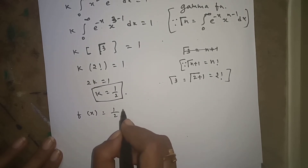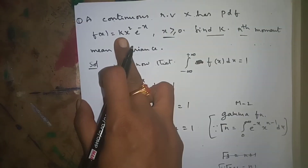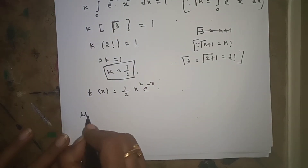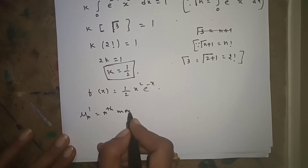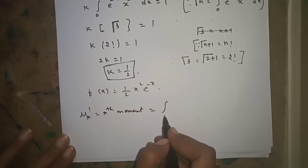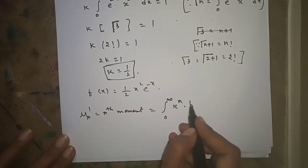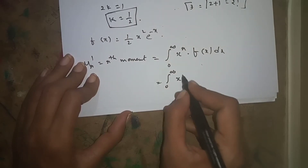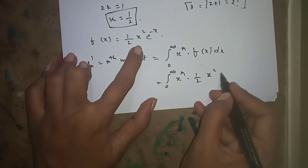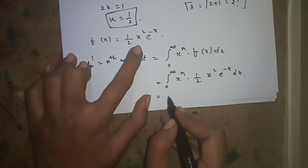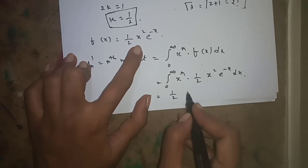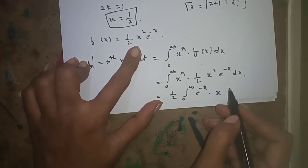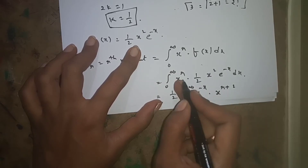With k = 1/2 substituted, now we find the rth moment. The rth moment μ'_r is equal to the integral from 0 to infinity of x^r·f(x)dx. Substituting f(x): μ'_r = integral from 0 to infinity of x^r·(1/2)·x²·e^(-x)dx, which equals (1/2) times the integral from 0 to infinity of e^(-x)·x^(r+2)dx.